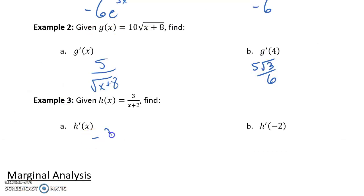So our derivative function is going to be negative 3 over x plus 2, that quantity squared. If we try to evaluate that function for x equals negative 2, we would get an undefined result. Because what we would end up doing would be dividing by 0.